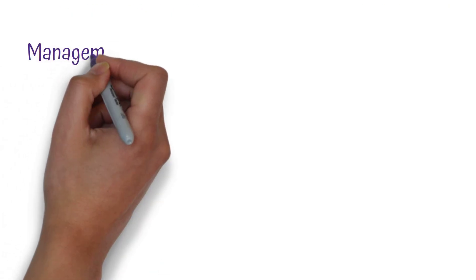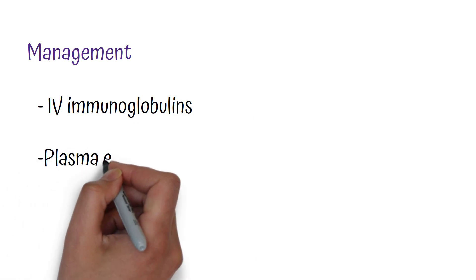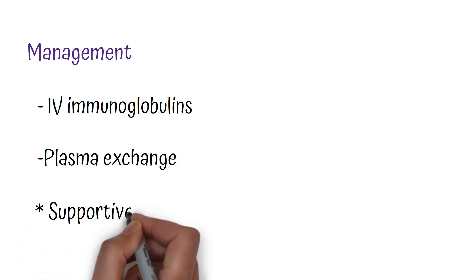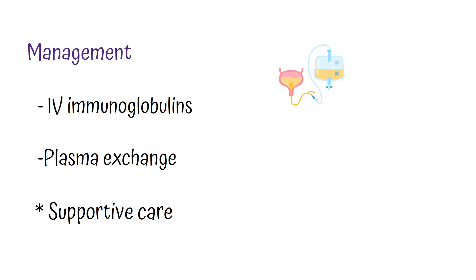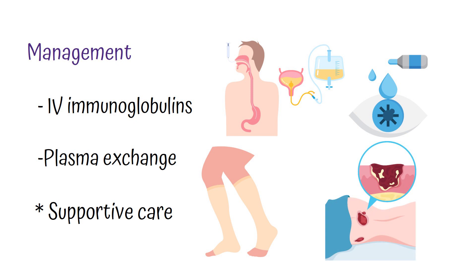Now let's move on to the management of Guillain-Barré syndrome. Specific therapy involves treatment with intravenous immunoglobulins or plasma exchange to remove the antibodies. Supportive care should be given, such as proper bowel and bladder care. Artificial tears can be used to prevent corneal ulceration due to facial nerve weakness. It is also important to give deep venous thrombosis prophylaxis to prevent blood clots, and to change the patient's position frequently to prevent decubitus ulcers, as these patients are mostly bedridden.